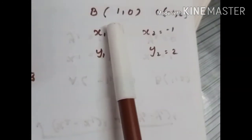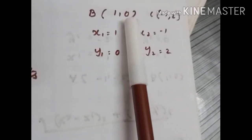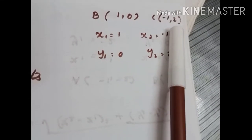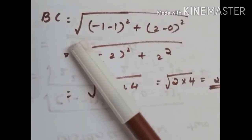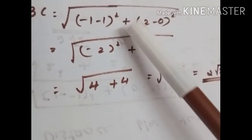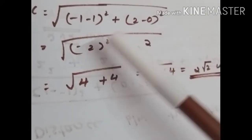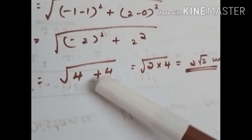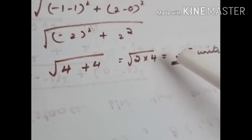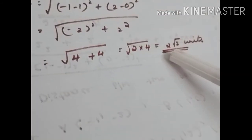Next we find BC, considering points B and C: x1 = 1, y1 = 0, x2 = -1, y2 = 2. Substituting in the distance formula: root of (-1 minus 1) squared plus (2 minus 0) squared = root of (-2) squared plus 2 squared = root of 4 plus 4 = 2 root 2 units. So BC = 2 root 2 units.